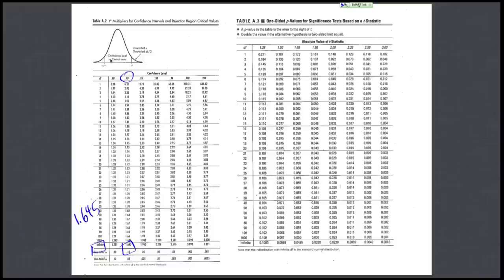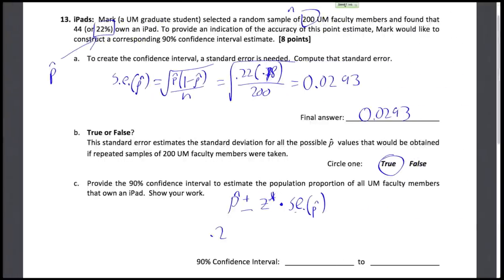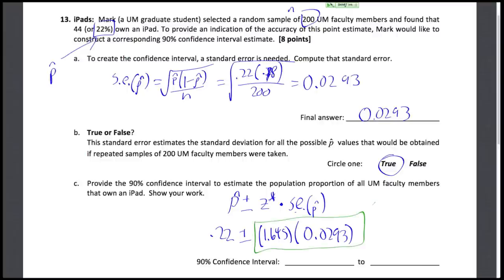Let's go ahead and plug that in as our z-star value. We have p-hat 0.22 plus or minus 1.645 times the standard error 0.0293. If we calculate that out to get our margin of error, this is 0.0482. Then if we add and subtract that to 0.22, we get our final answer of 0.1718 to 0.2682.